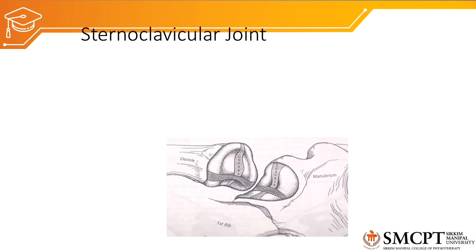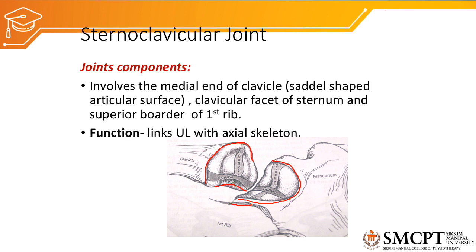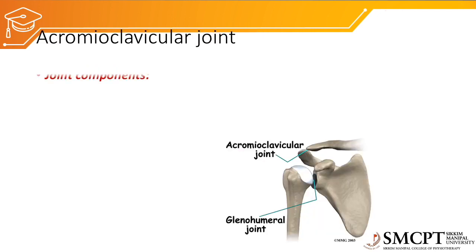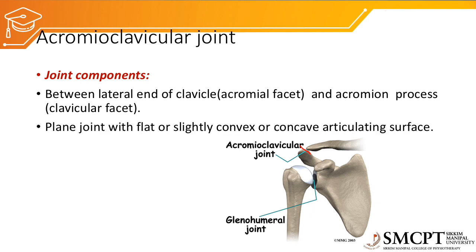The sternoclavicular joint is formed by the medial end of the clavicle, which is saddle-shaped, and the clavicular facet of the sternum, which is also saddle-shaped. The medial end of the clavicle also gets attached with the superior border of the first rib. The function of the sternoclavicular joint is to link the upper limb with the axial skeleton. The acromioclavicular joint is formed between the lateral end of the clavicle and the acromion process; it is a plane type of joint with flat or slightly convex or concave articulating surfaces.